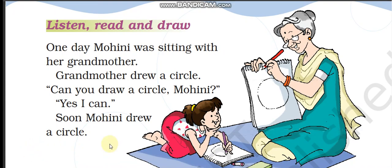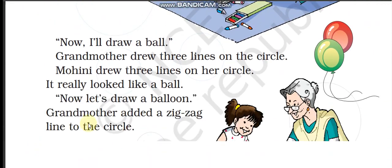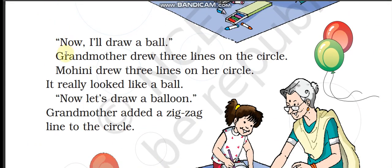Mohini drew a circle. Jaldi Mohini ne ek gola banaya. Now, I will draw a ball. Ab, maa ek ball banaoongi. Grandmother drew three lines on the circle. Dadi maa ne gola pe teen rekhaein kheechi. Mohini drew three lines on a circle. Mohini ne apne gola pe teen rekhaein kheechi. It really looked like a ball!